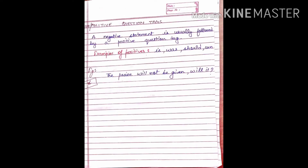Affirmative or positive question tags: a negative statement is usually followed by a positive question tag. Examples of positives are is, was, should, can. For example, 'The prize will not be given, will it?' The statement 'The prize will not be given' is negative. Here we have used a positive question tag, 'will it?' The pronoun form of the subject, 'prize,' that is 'it,' has been used in this tag.